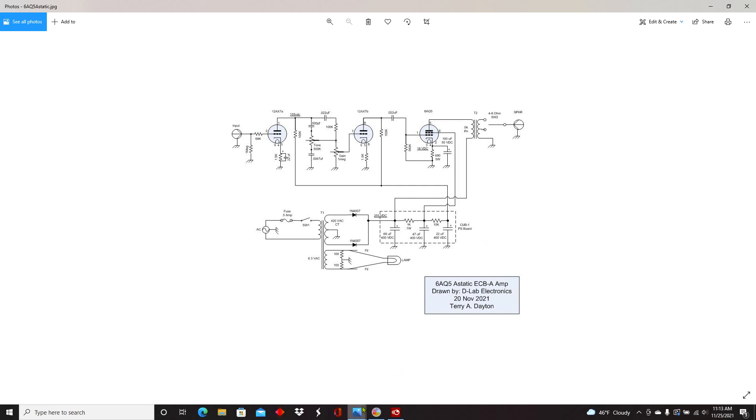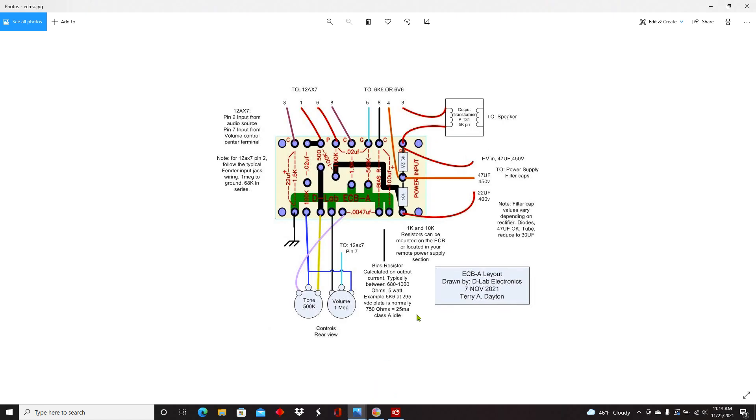And the beauty is, if we take a look here at the ECBA board, you see that it shows connections to the 6K6 or 6V6. I have not updated this for the 6AQ5, but it's a simple matter of connecting to the right pins on that new tube base. Everything else stays the same. Let's fire this thing up and I'll show you guys how she looks electrically.